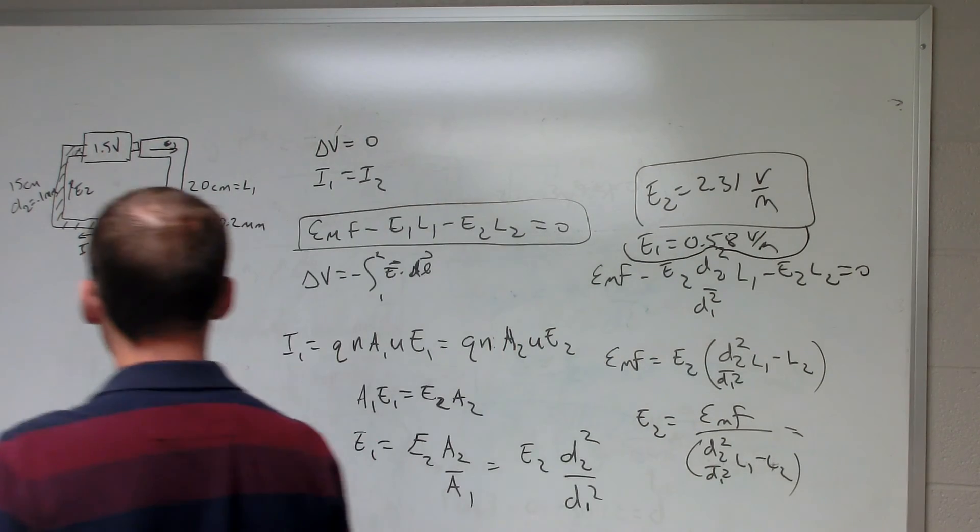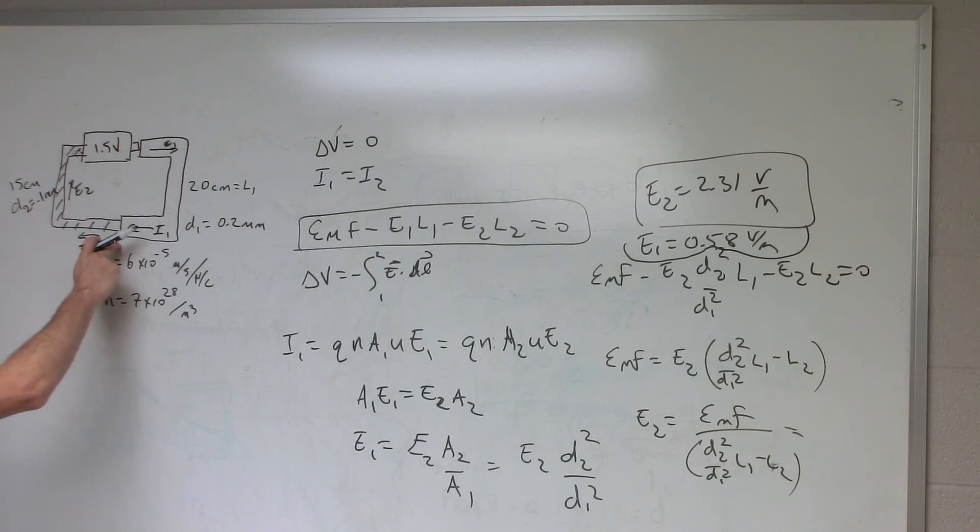Okay, so let's just double check over here. This says that I have a greater electric field here, and that's going to have to be true. Because what happens is, since I have a smaller cross-sectional area, I'm going to have to have a higher drift velocity to have the same current. So a higher drift velocity would mean a greater electric field.